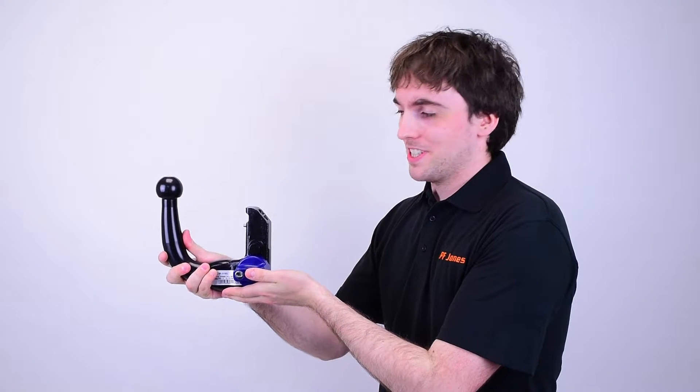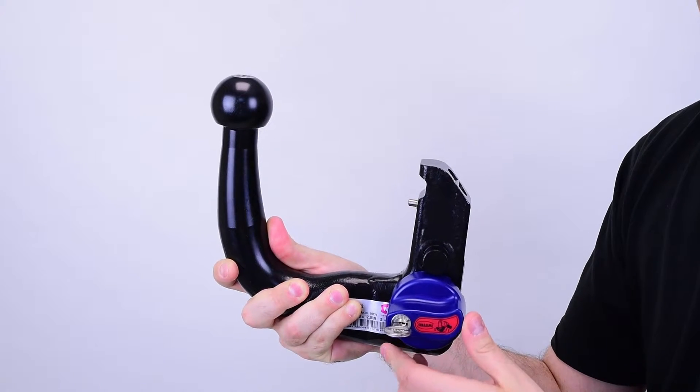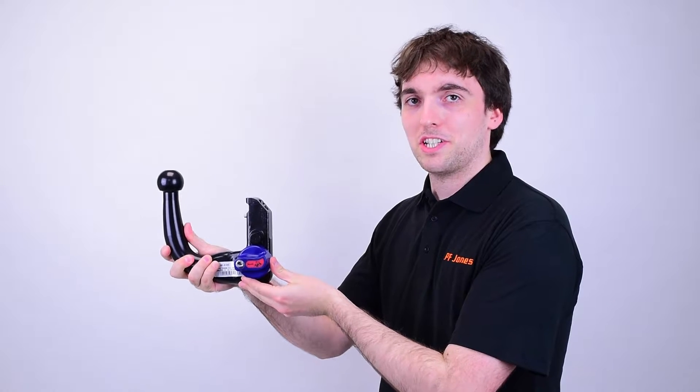This is a Witta detachable swan neck. It can be removed when not in use and attached using a secure locking mechanism.